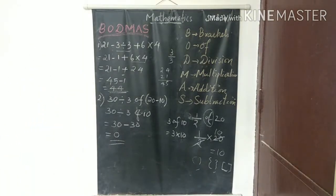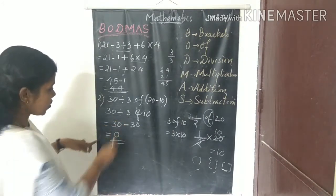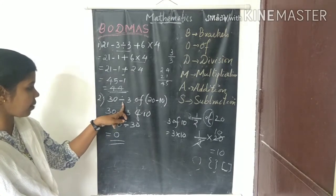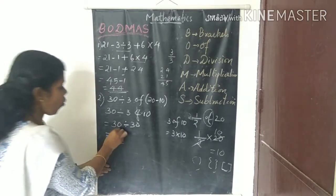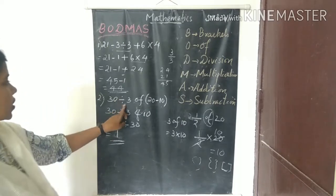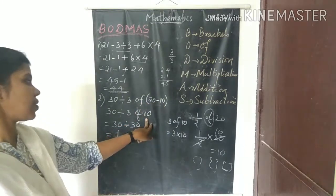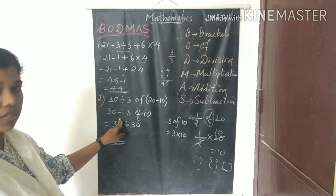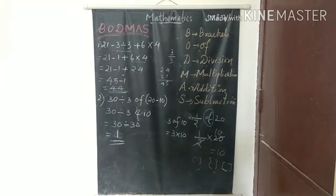Let me clarify: 30 ÷ 3 of (20 - 10). First, inside the bracket: 20 minus 10 equals 10. Then 3 of 10 equals 30 (of function becomes multiplication). Then division: 30 ÷ 30 equals 1. Answer is 1.